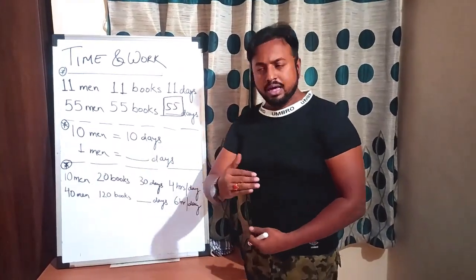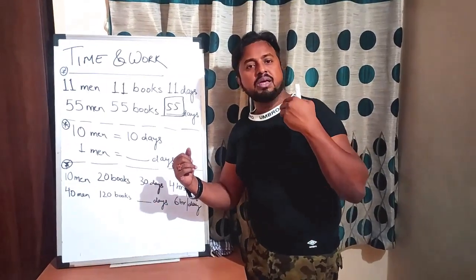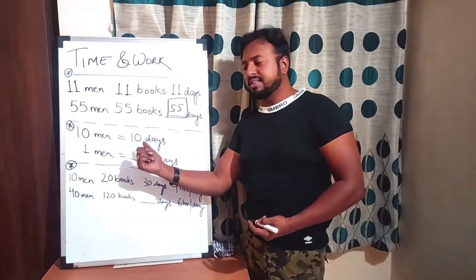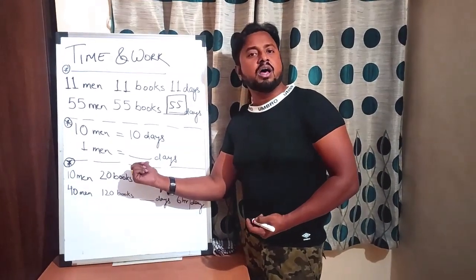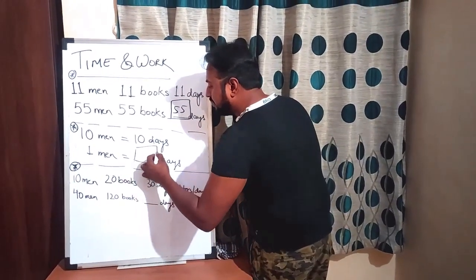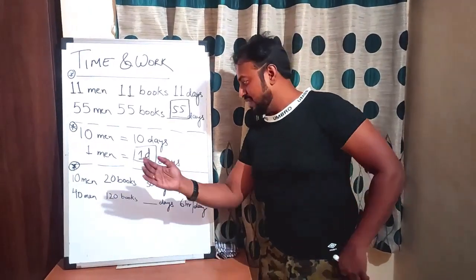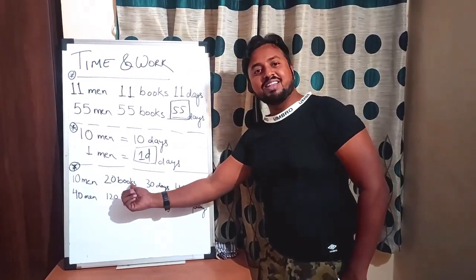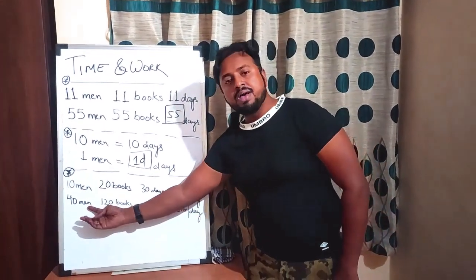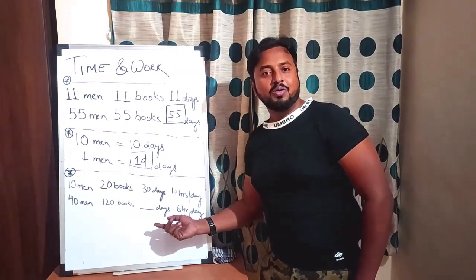Second question — I have taken very simple numbers. If 10 men can do a work in 10 days, then one man will do it in how many days? It's obvious people will say one day. But if I ask you the third question: 10 men, 20 books, 30 days, every day 4 hours — then how many people can do this work? Now you will have to think.